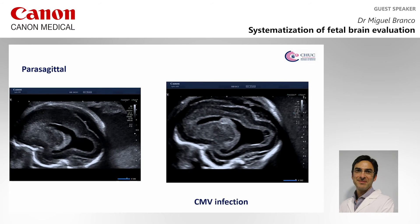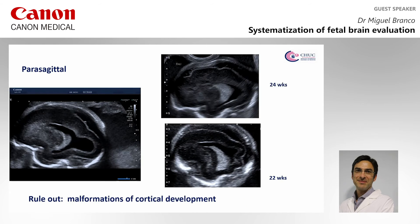This plane is very important in situations of CMV infection like this one. We can evaluate the hyperechoic periventricular area, particularly on the posterior aspect of the occipital horn. It also allows us to rule out malformations of cortical development, as in these situations.